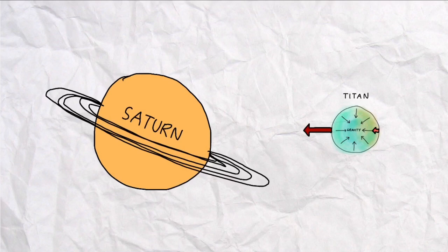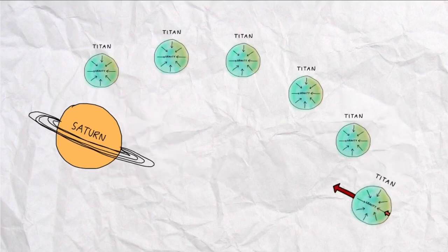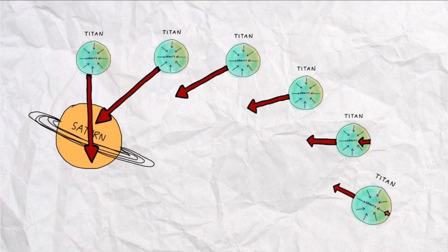So, the question is, what would happen if Titan got closer and closer to Saturn? Well, as no surprise, the gravitational integrity of the moon would stay the same, but clearly the tidal forces will get stronger and stronger.